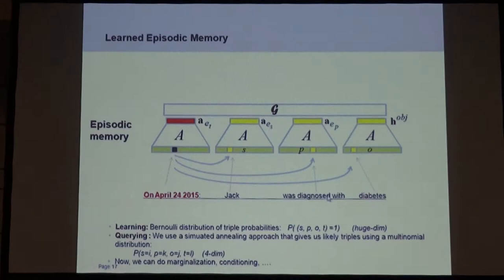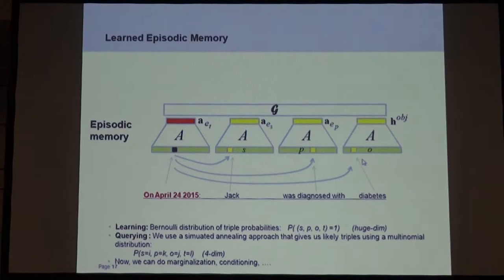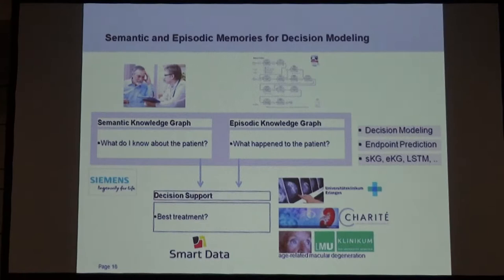We just have one more latent representation here, and we can represent that on this day Jack was diagnosed with diabetes. In learning we use a Bernoulli distribution, so everything is nicely independent and we don't have to care about global normalization. In querying, we put it into a simulated annealing framework, and the nice thing is we really get a joint distribution over subject, predicate, object, and time. We can do marginalization and conditioning — for example, given only the representation of time, we can predict the probability that Jack did something, was diagnosed with something, and was diagnosed with diabetes.